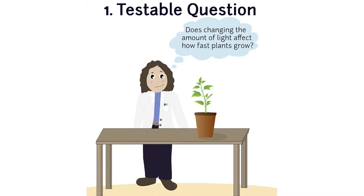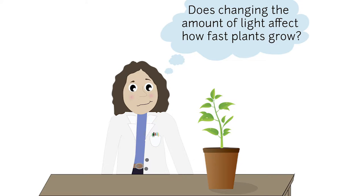The first step is to ask a question that can be tested. Usually, scientists form a question after they notice something interesting. For instance, you may see that a plant in full sunlight is taller than a plant in the shade. And your testable question could be, does changing the amount of light affect how fast plants grow?